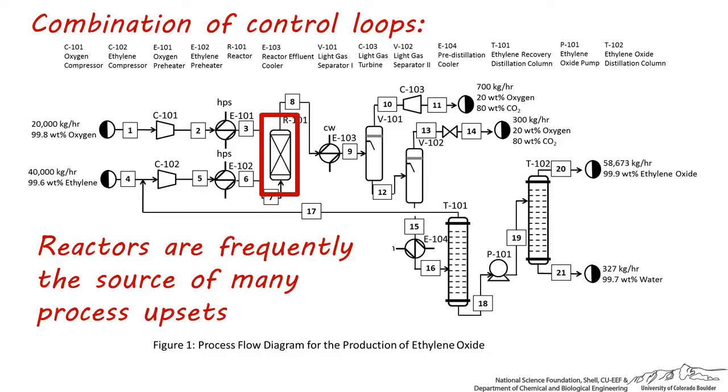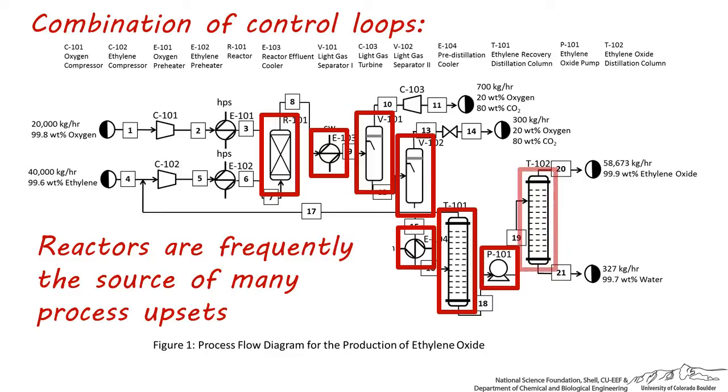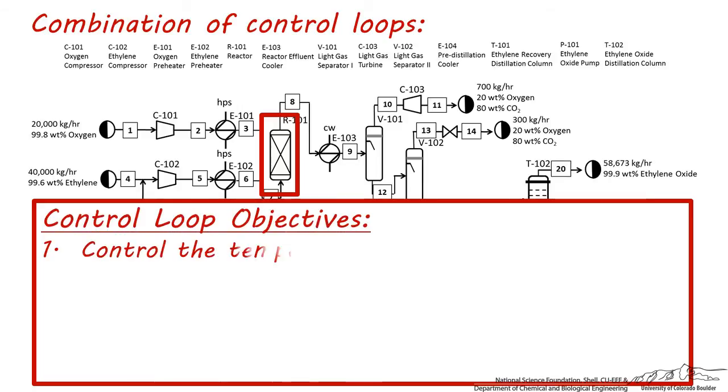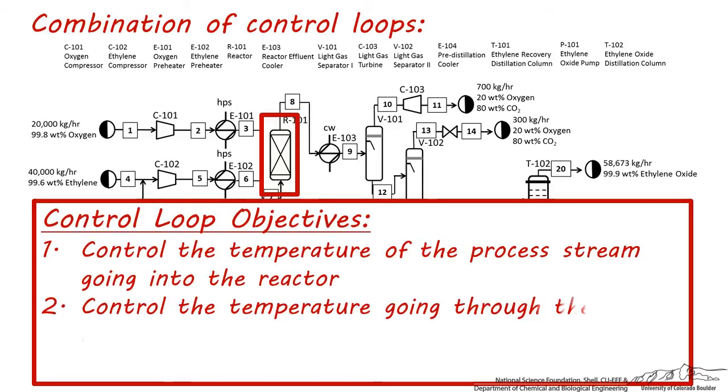R101 is an isothermal high-pressure reactor. If either temperature or pressure are outside of their design range, the operation of all the process units downstream will be affected, and it's very likely that not enough desired product will be made. So the purpose of these feedback control loops will involve three factors, controlling the temperature of the process stream going into and through the reactor, and to control the pressure going into the reactor.